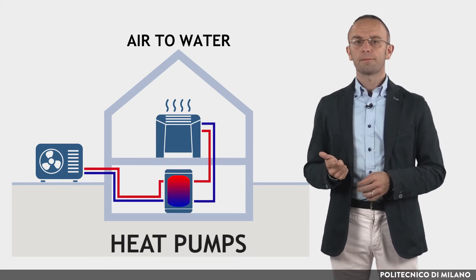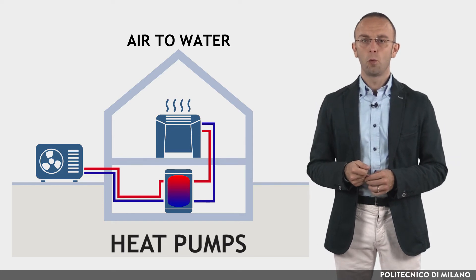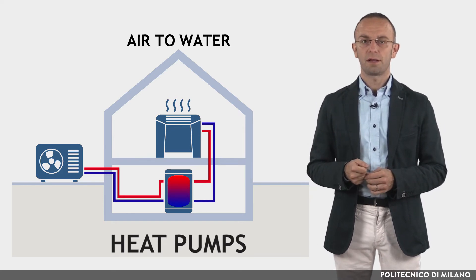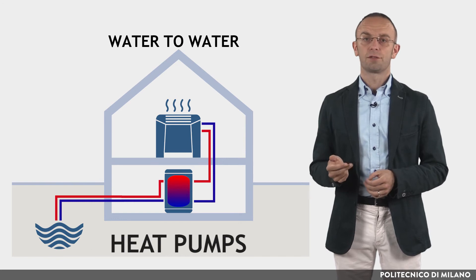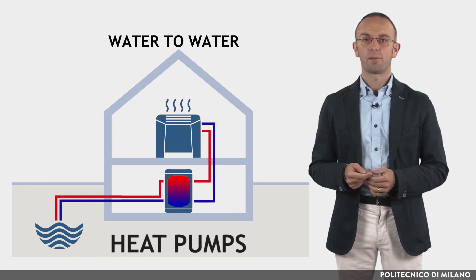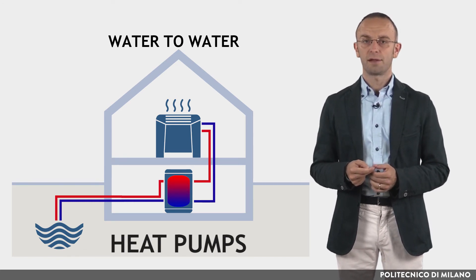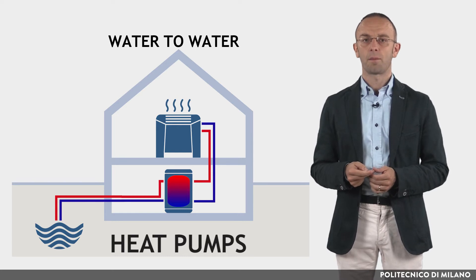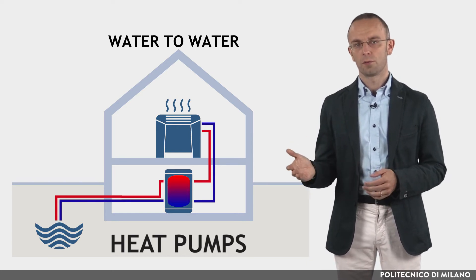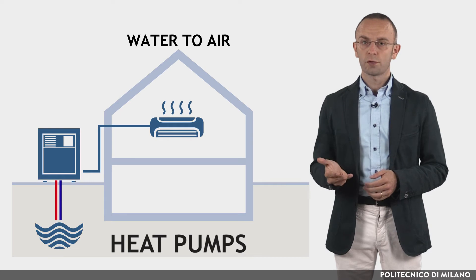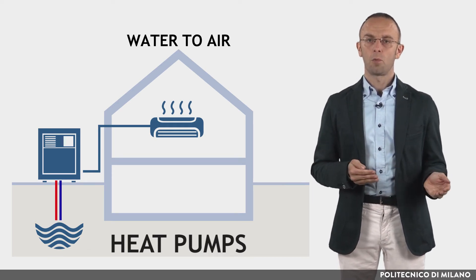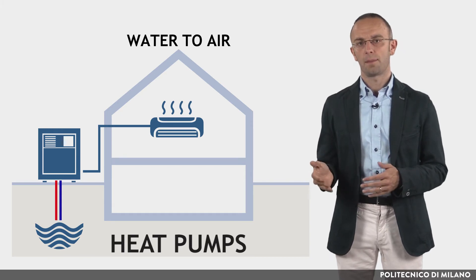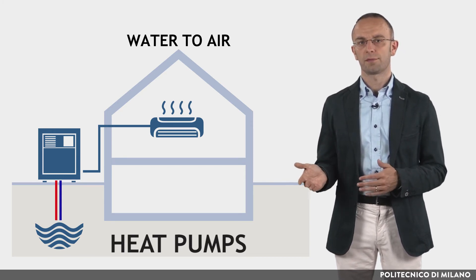Air-to-water: the refrigeration machine cools the room air directly and transfers heat to the external environment by means of a water-cooled condenser. Water-to-water: the refrigeration machine draws heat from the internal water circuit and transfers heat to the external environment by means of a water-cooled condenser. Water-to-air: the refrigeration machine draws heat from the internal water circuit and transfers heat to the external air by means of an air-cooled condenser.